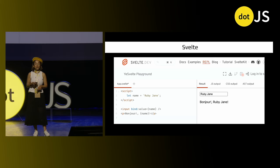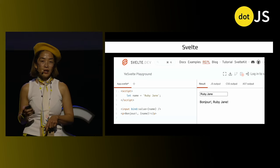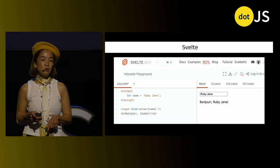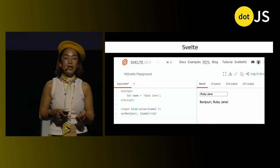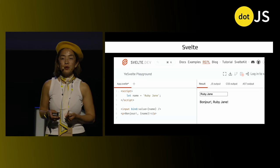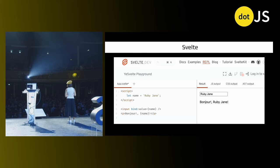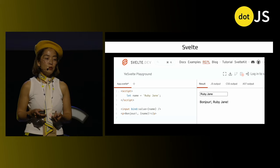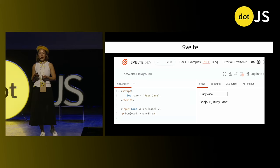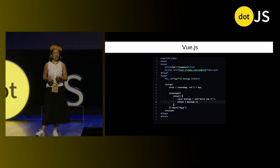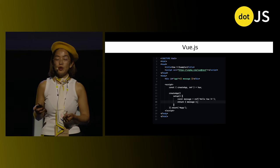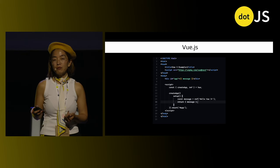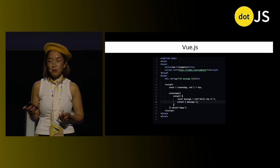Svelte, on the other hand, takes a slightly different approach — it compiles reactive code at build time, making reactivity inherent and highly performant. In Svelte, the bind:value directive creates a reactive binding. When the name variable changes, the UI updates immediately, just like SolidJS signals. This compiled reactivity minimizes runtime overhead and enhances performance. Vue's intuitive reactivity system makes state management and data binding as simple as breathing.